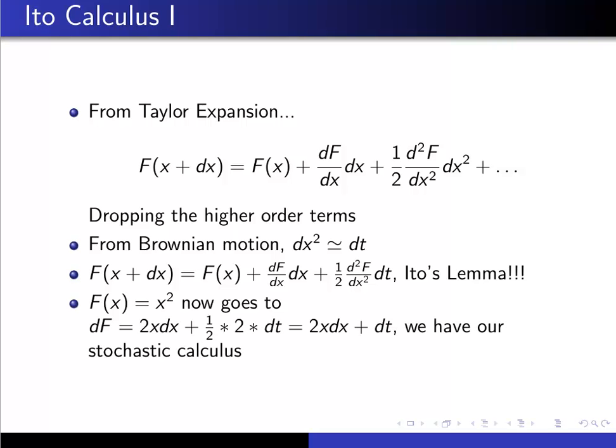So now if you have F(x) = x², it goes to dF = 2x dx + 1/2 times 2 times dt. You can check that yourself. So we have x² goes to dF/dx which is 2x dx plus 1/2 d²F/dx² which is 2 dt. And if you just tidy that up, you get our result. So we have our stochastic calculus, so that's our first big concept that I wanted to get across.